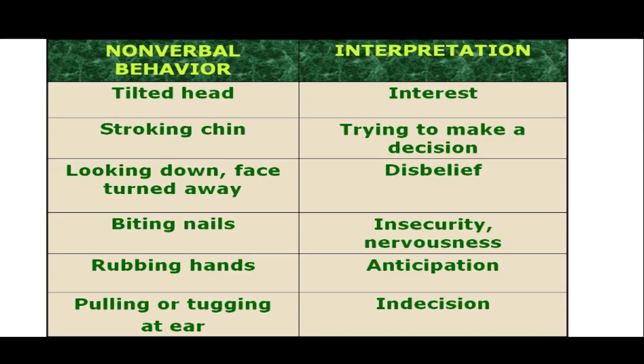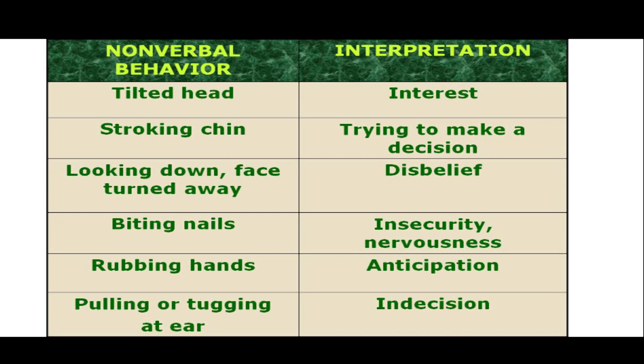Let us look at some quick behaviour and interpretation. A tilted head — slightly tilted — indicates the person is interested in your talk. Stroking the chin means they are trying to make a decision. Looking down with the face turned away means they are not believing you. Biting nails: insecurity and nervousness. Rubbing hands: anticipation.